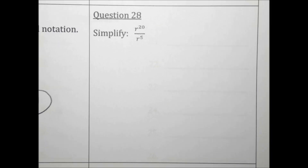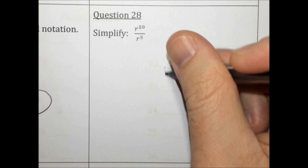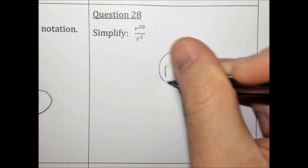Simplify. When you divide, you subtract exponents. 20 minus 5 is 15. The answer is r to the 15th.